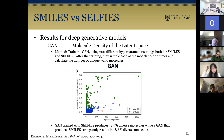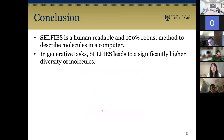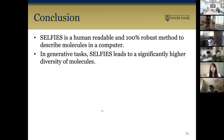In summary, SELFIES is human-readable and a 100% robust method. With SMILES, you may encounter cases where a string cannot be transferred to a valid molecular graph. For SELFIES, it always corresponds to a valid molecule and can always be transferred to a molecular graph. In generative tasks, SELFIES leads to significantly higher diversity of molecules and improves the validity of the latent space.